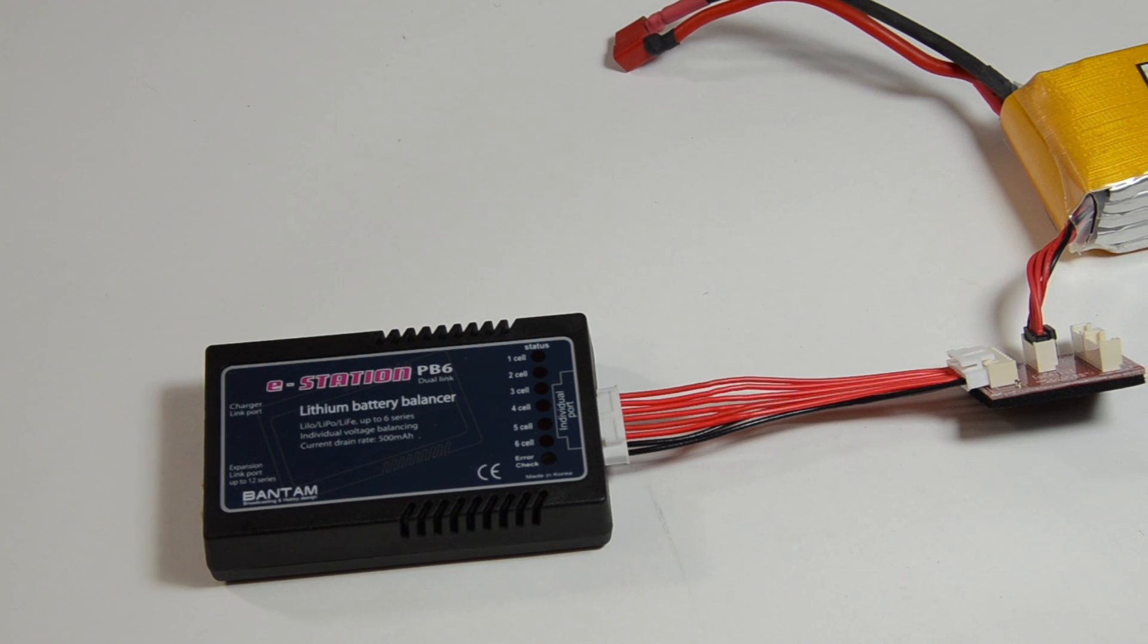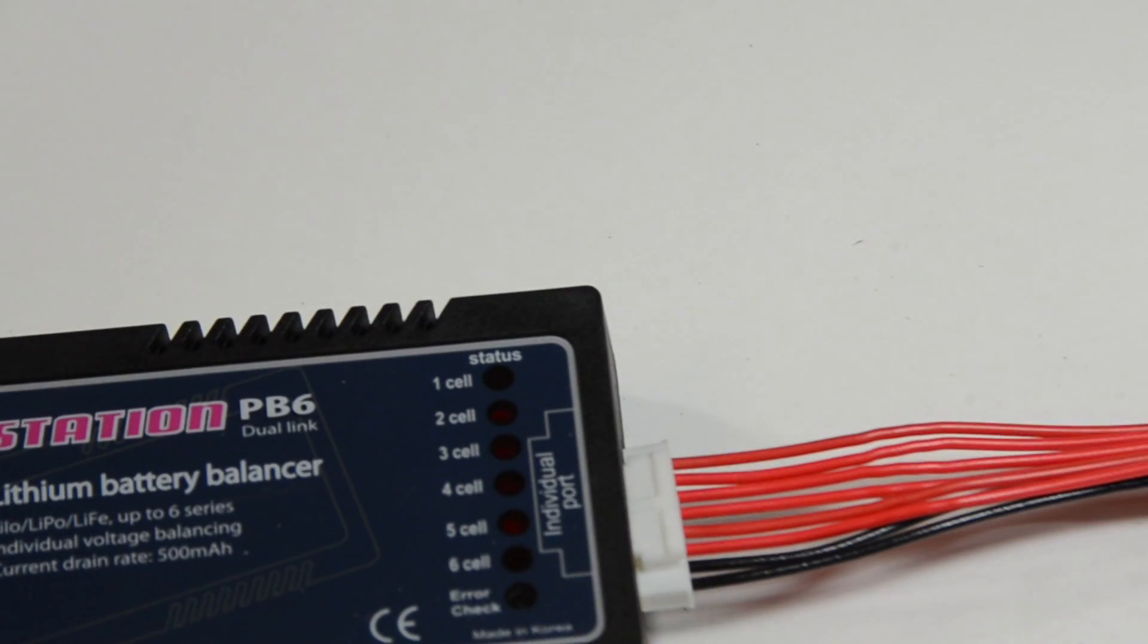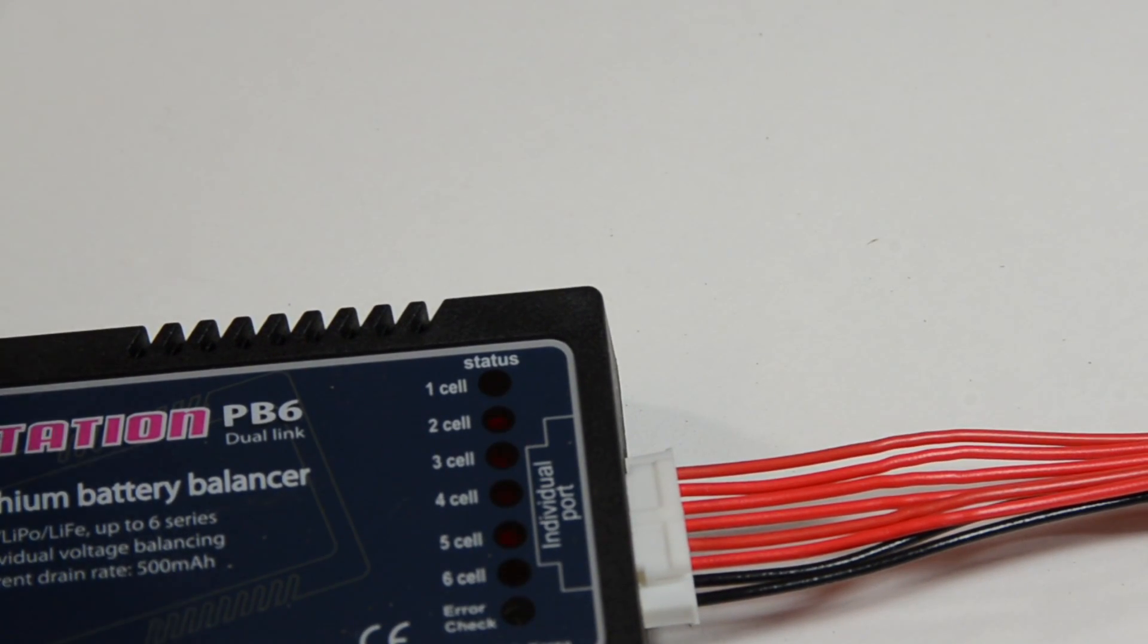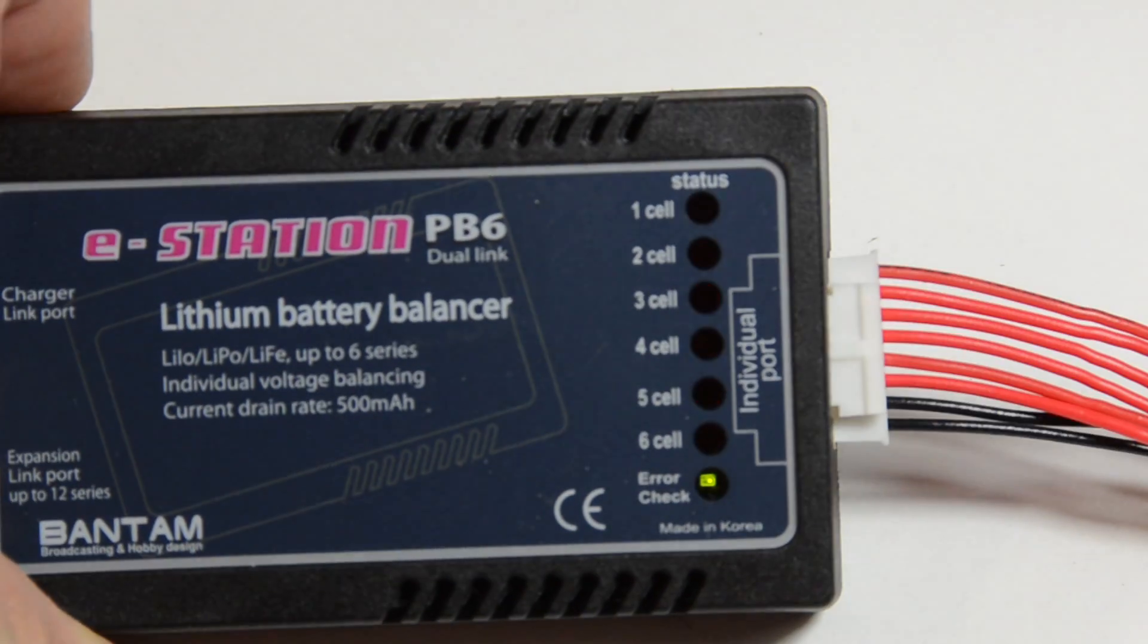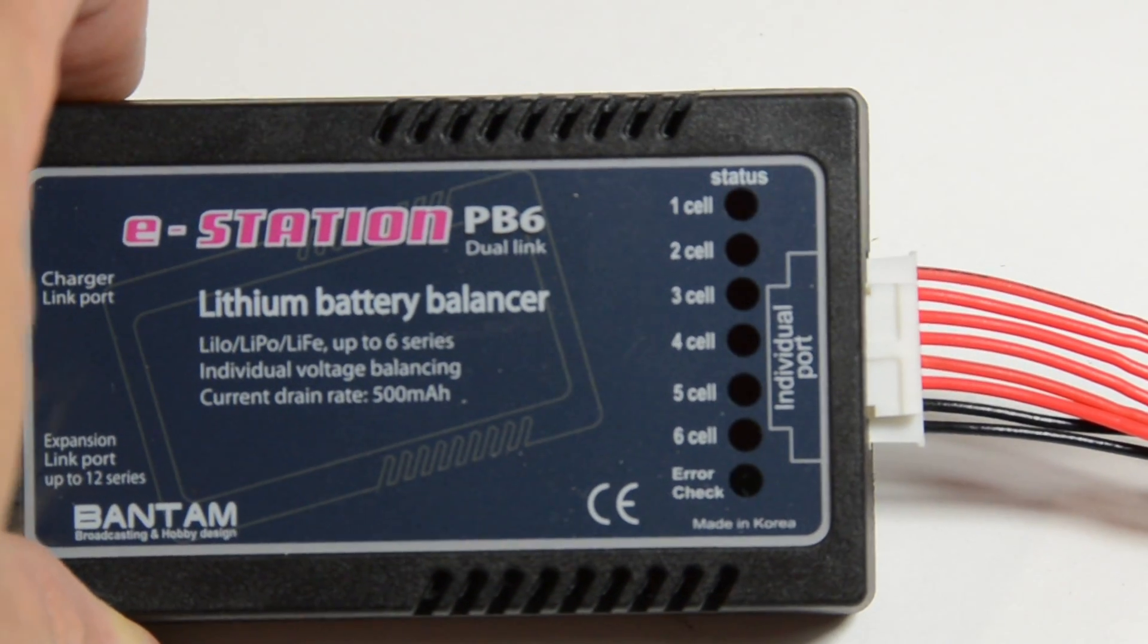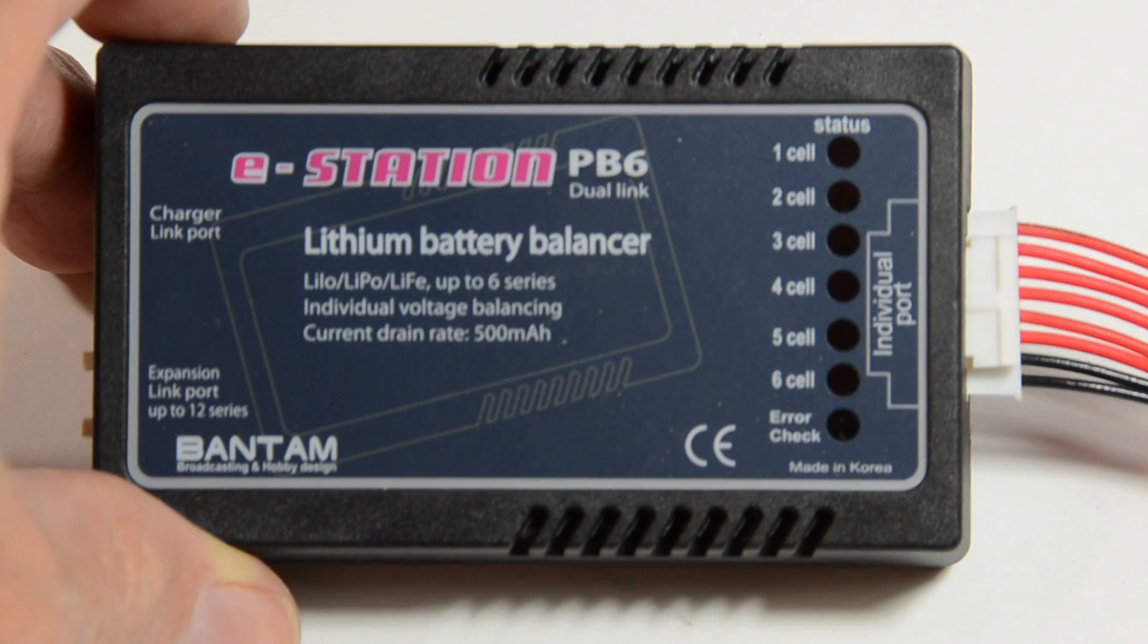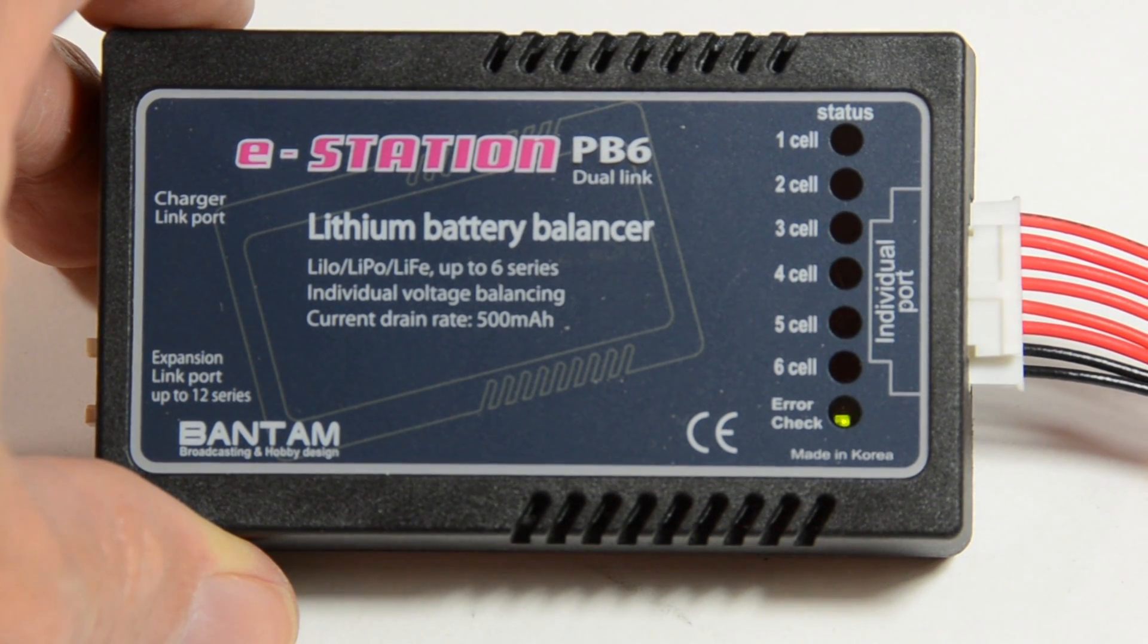So I've hooked a FlightPower 5S pack to it and it goes to work. What it does is it hits the cells with the highest voltage with a half amp load and brings them down to the level of the lowest voltage cell.